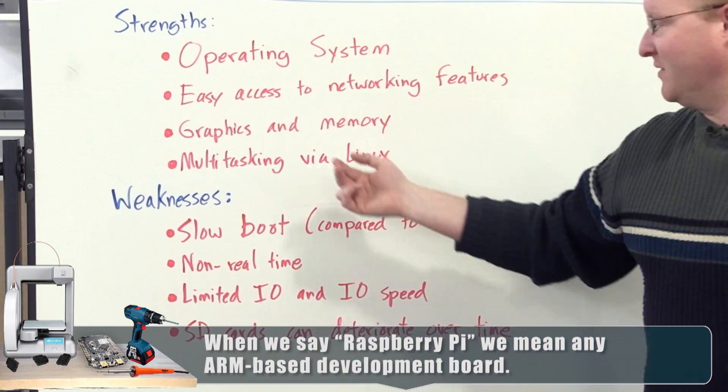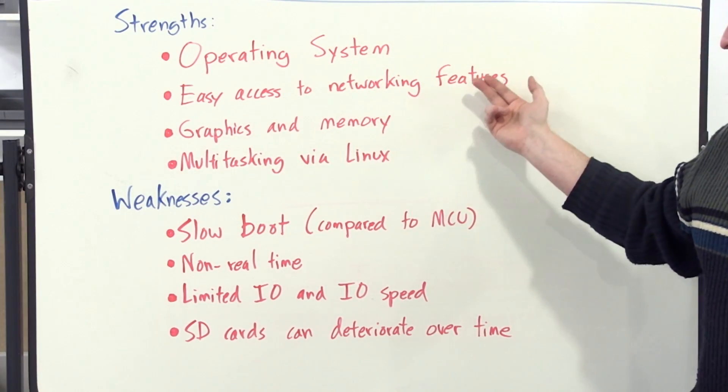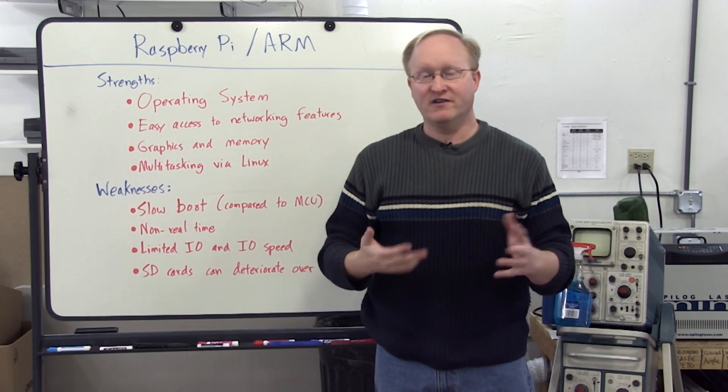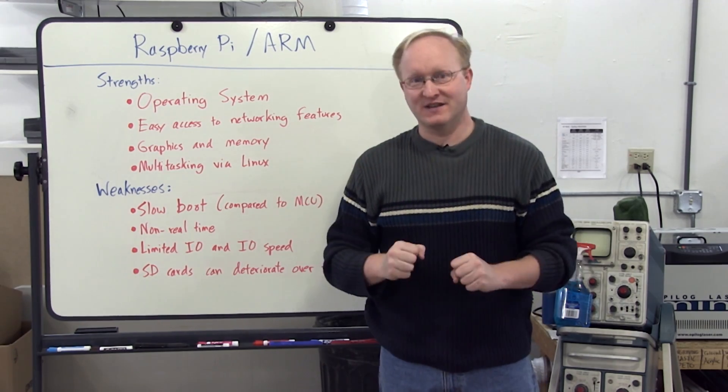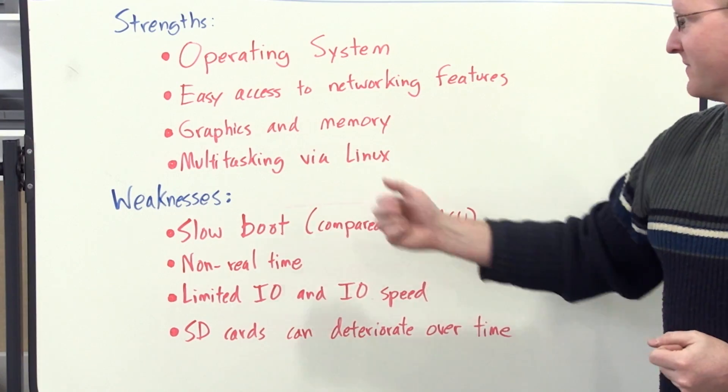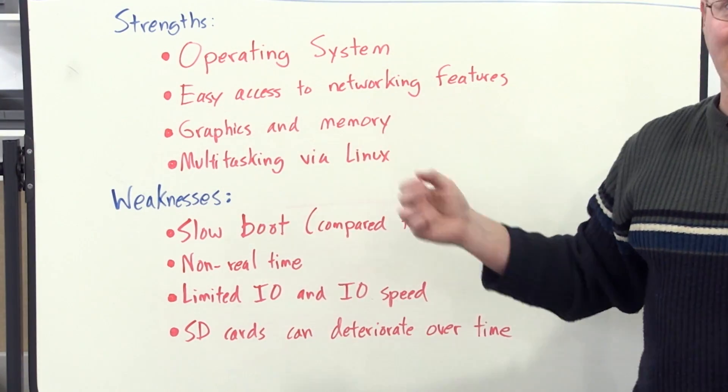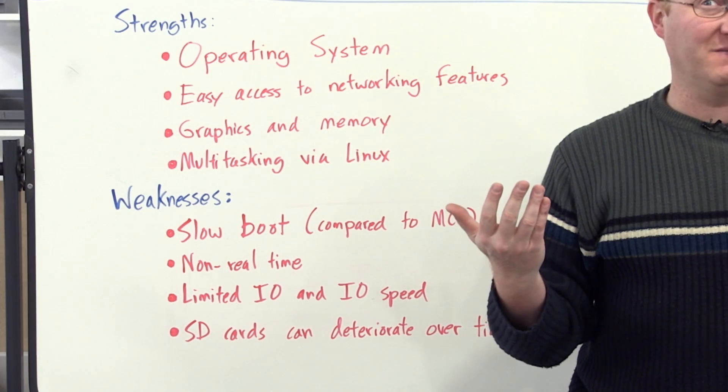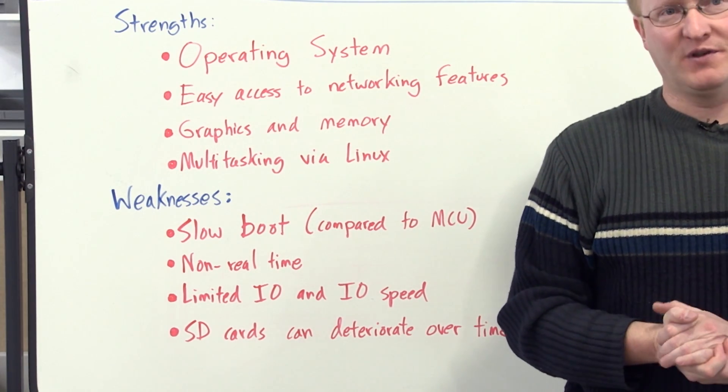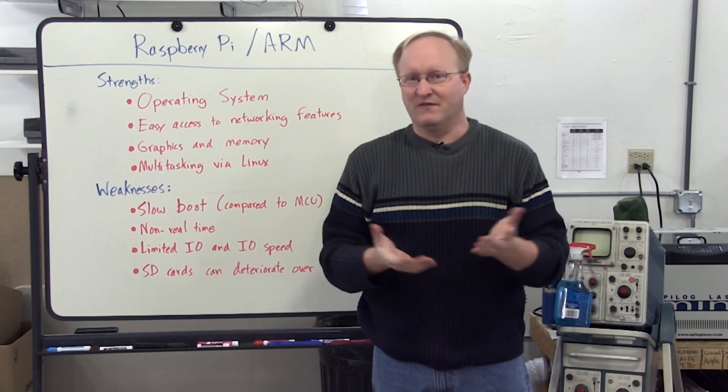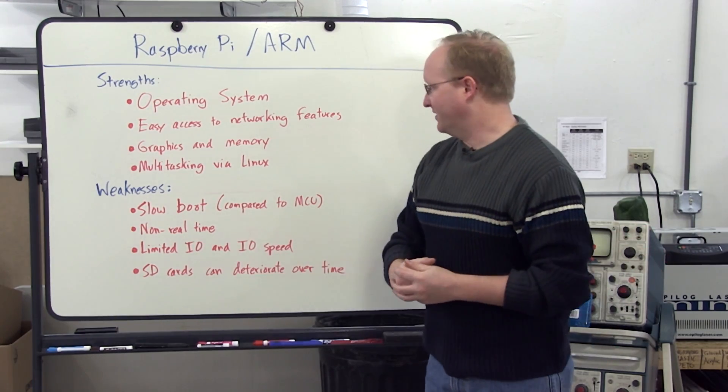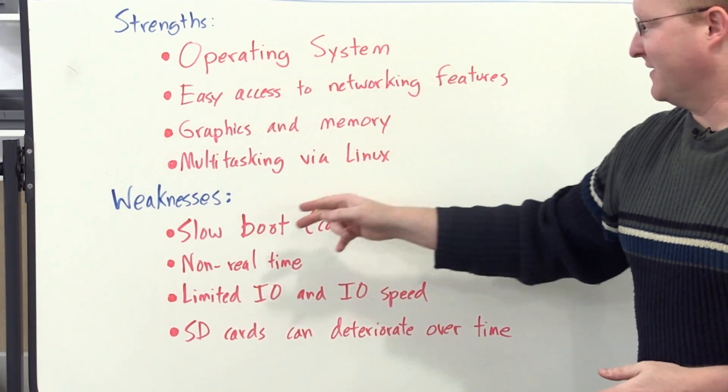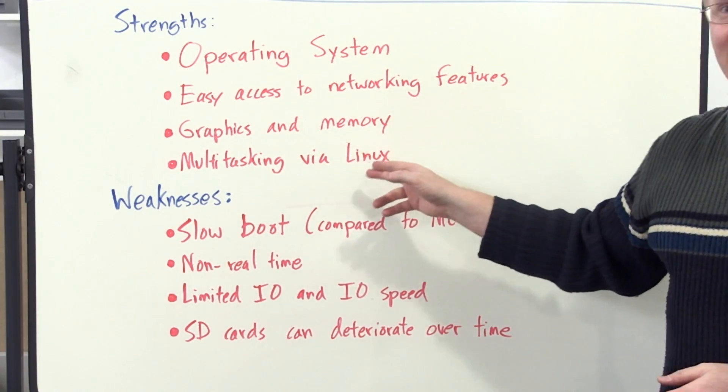And with a real operating system, you also have easy access to networking features such as Wi-Fi, internet. So if you want to build something that can access the internet, you know, like an internet of things, a Raspberry Pi is a great choice. Also, you get a lot of graphics and memory. As I mentioned earlier, you get like half a gigabyte of memory with a Raspberry Pi versus a few hundred kilobytes maximum with a microcontroller.